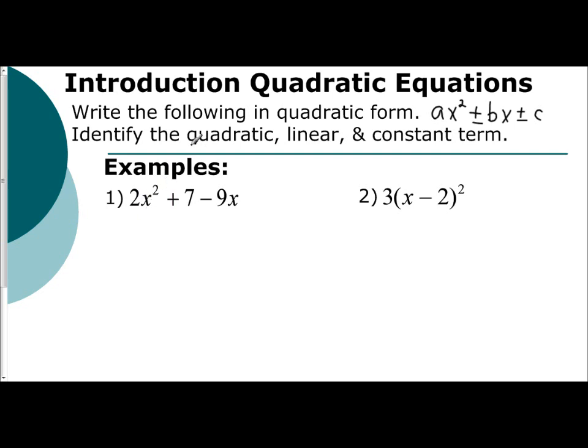So if you look, my quadratic term is first here, so that's good. So I'm going to write down my 2x², but this 7 is my constant. This -9x is my linear term. And so that's going to go next, -9x, and then plus my constant 7.